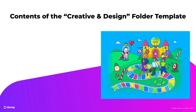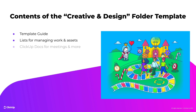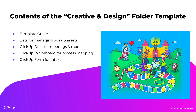The components of the Creative and Design Template include: a template guide that provides a guide to the structure, setup, and use of the template; lists for managing creative design projects and an asset library; ClickUp Docs for team meeting minutes, SOPs, and creative briefs; a whiteboard that maps the creative design process; a form for submitting creative design requests; and various task views to help manage the work. These components all work together to track and manage the work done by a creative design team.